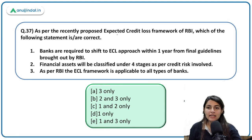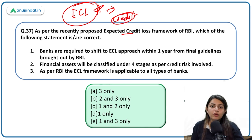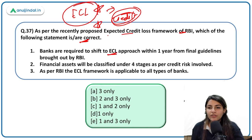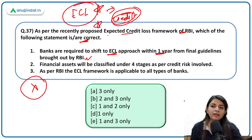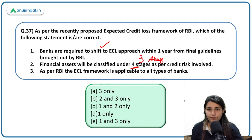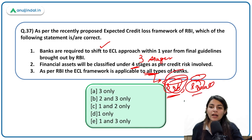The Expected Credit Loss (ECL) framework proposed by RBI: banks are required to shift to the ECL approach within one year from the final guidelines brought out by RBI — correct. Financial assets will be classified under four stages — incorrect; there are actually three stages. The ECL framework is applicable to all types of banks — incorrect; RRBs and small banks are excluded from this framework.